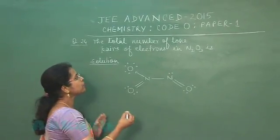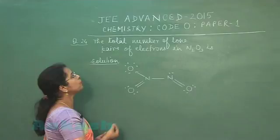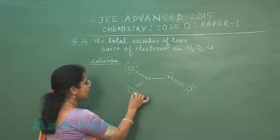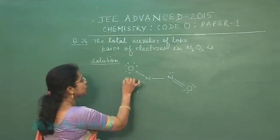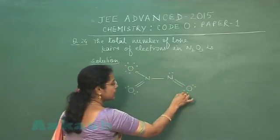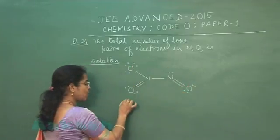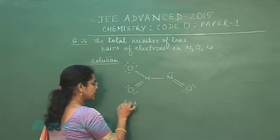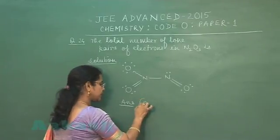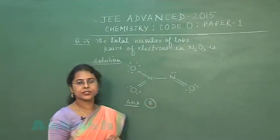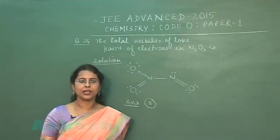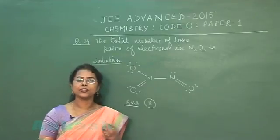Counting the total number of lone pairs in this compound: 1, 2, 3, 4, 5, 6, 7, 8. So the answer is 8. N2O3 has 8 lone pair electrons in this structure.